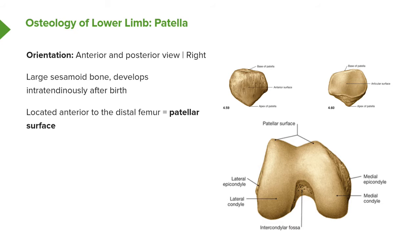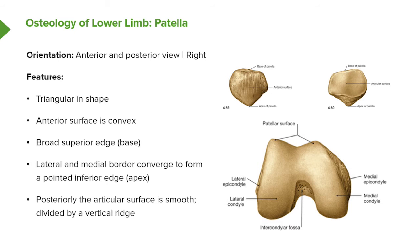It's located anterior to the distal femur. We've got the patellar surface which we can see on the anterior surface of the femur. It's triangular in shape. Its anterior surface is convex and it has a broad superior base. It has a lateral and medial border, and these converge to form a pointed inferior edge known as the apex.